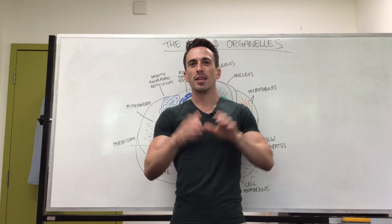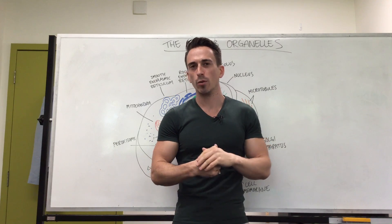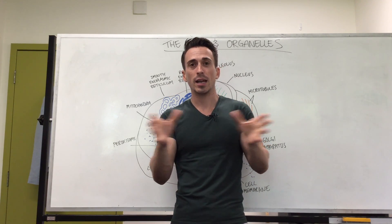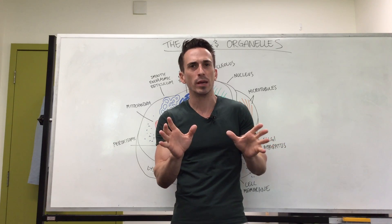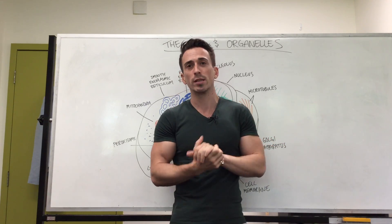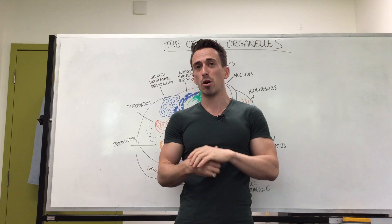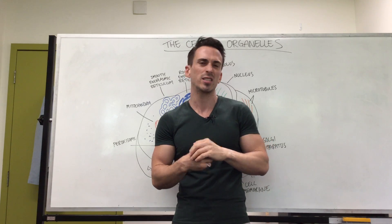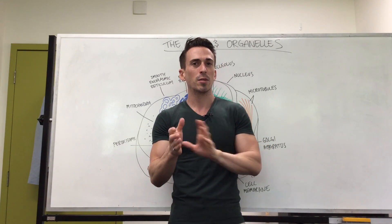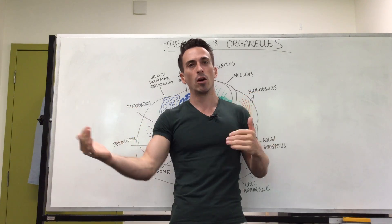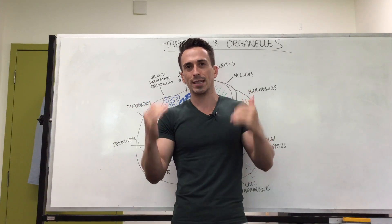Hi everyone, Dr. Mike here. There are 100 trillion cells within your body. A red blood cell can actually be around about 10 micrometres in diameter — not very big, one of the smallest cells. You can have a sperm cell which is around about 50 micrometres in diameter, still not very big, but you can have a nerve cell that can be around about one metre long. So cells can vary quite significantly.